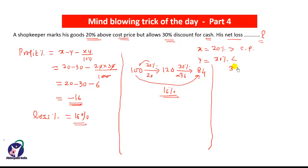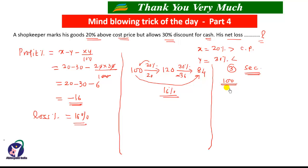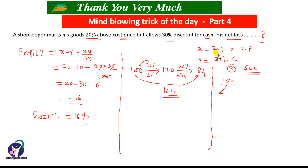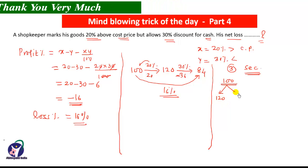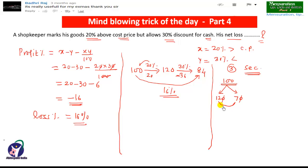Now trick number three — the most important, giving the answer in seconds. Let the actual price be ₹100. 20% increase makes it ₹120. If 30% discount is given on ₹100 it becomes ₹70. Forget the zeros: multiply 12 and 7 — 12 × 7 = 84. Then 84 − 100 = −16%. The minus sign shows a loss, and therefore the loss percent is 16% in this transaction.